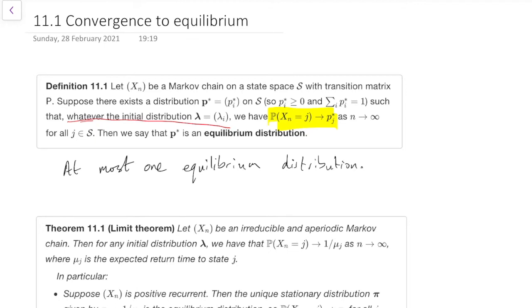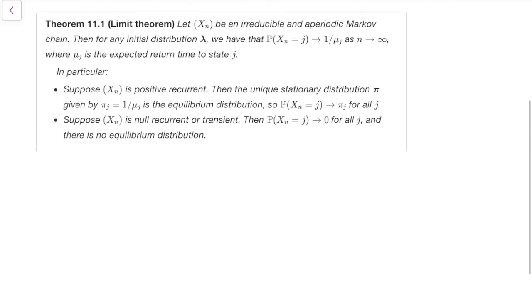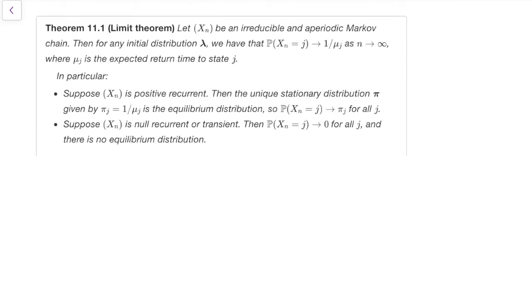Well, the answer to that is given by the limit theorem, which is the next theorem, and is the most important theorem in this course. So let's look at the first part of it. It says, let X_n be irreducible and aperiodic. And for any initial distribution, we have this limiting behaviour where mu_j is the expected return time.